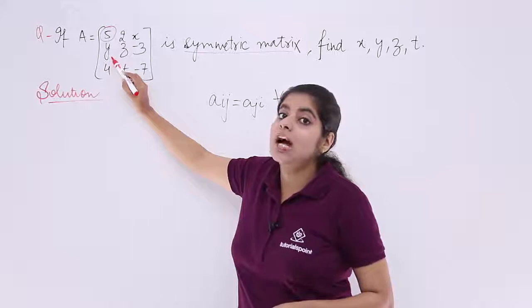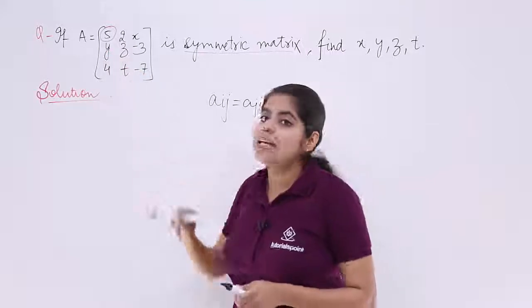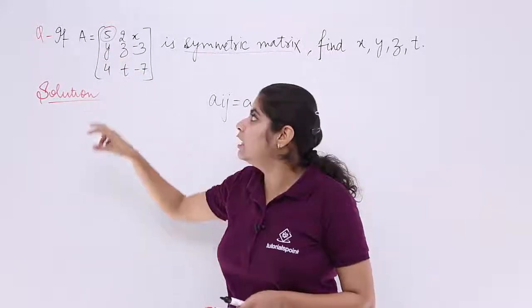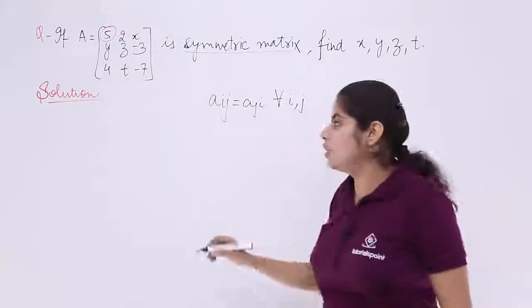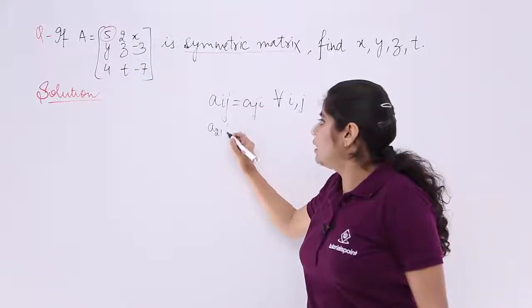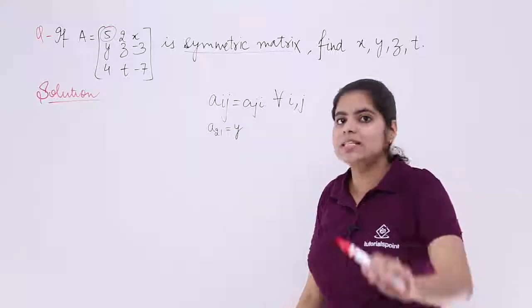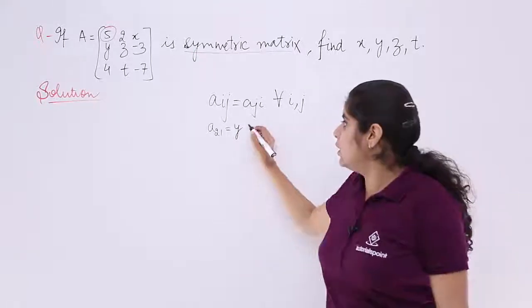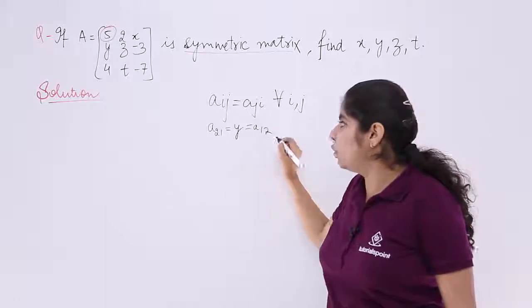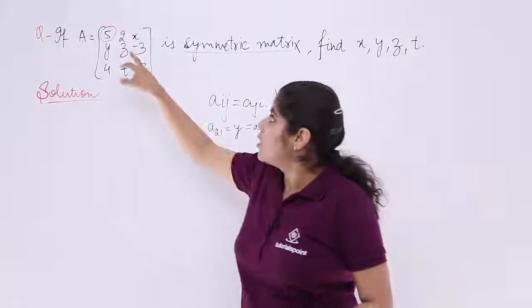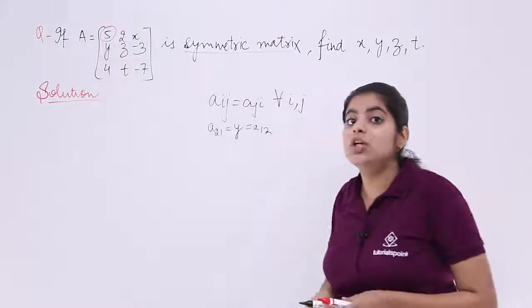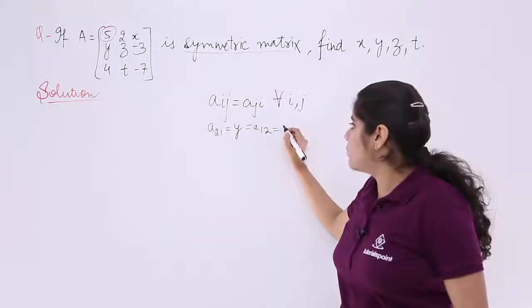Next, we have y which is an unknown variable. y is the element in the second row and the first column, so it is A_21. If A_21 is equal to y and it is a symmetric matrix, then it should be equal to A_12 element. First row, second column is 2. That means my y should be 2.